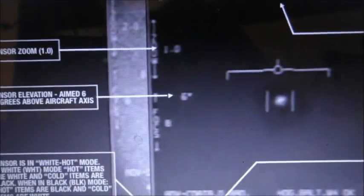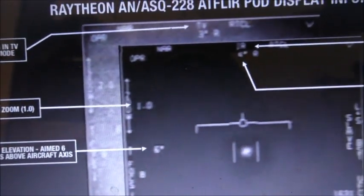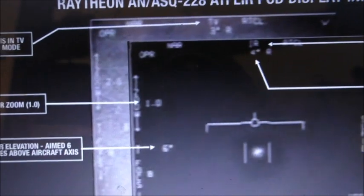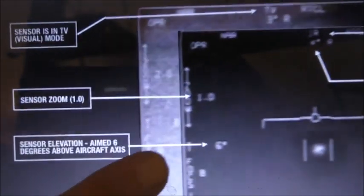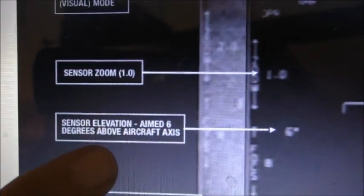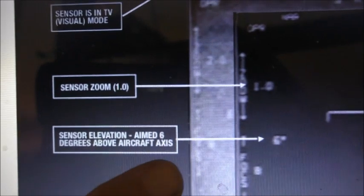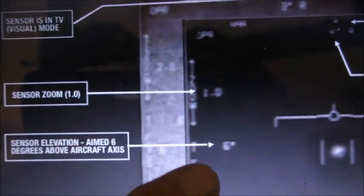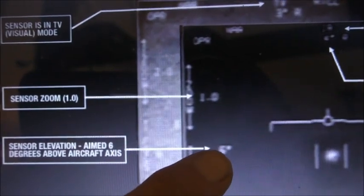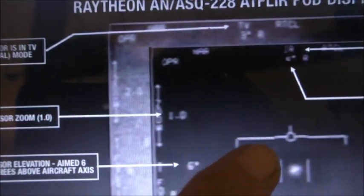So when we see that, I don't have my deluxe mechanical pencil on me, never mind. So this here, this is 6 degrees, this is showing 6 degrees. And if we look at the caption, it says sensor elevation aimed 6 degrees above aircraft axis. So on the Tic Tac video, that says minus 26 degrees. So that will be minus 26 degrees below the axis of the aircraft.